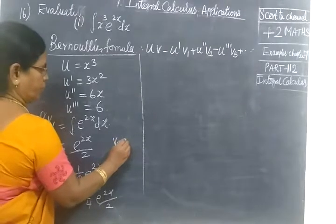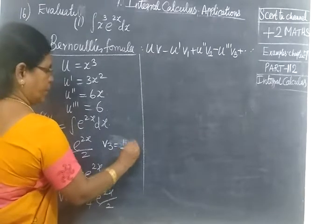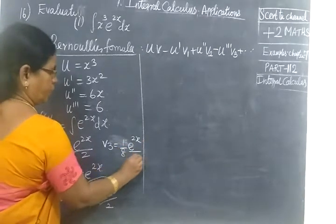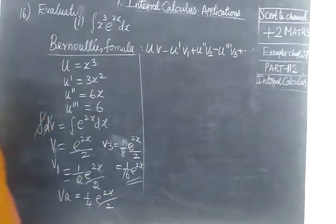V2 equals e^(2x) by 8, and V3 equals e^(2x) by 16. So this is very simple. Many times we did it like this.